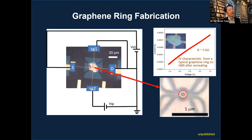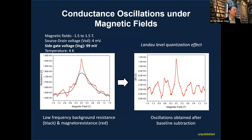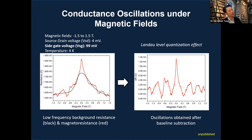We are now in good shape. The overall resistance through the ring is about 5 kilo-ohms, expected given the small ring size since resistance is proportional to the cross-sectional area. We performed magnetic field sweeping from -1.5 T to +1.4 T with a source-drain voltage of 4 millivolts and side-gate voltage of 99 V.